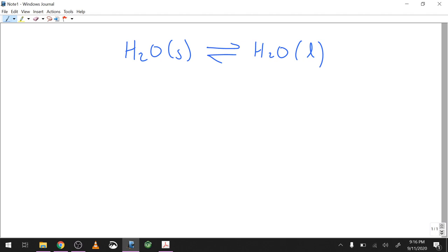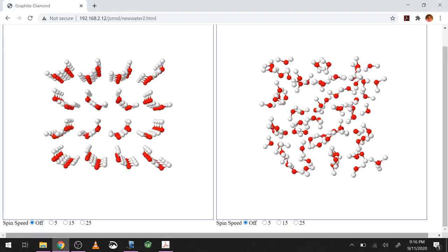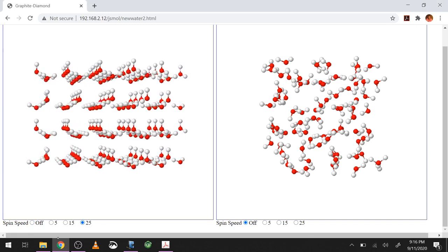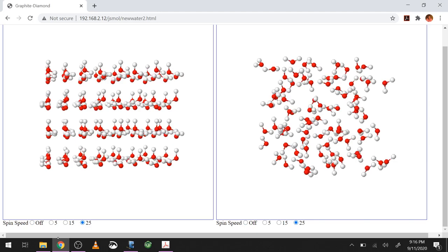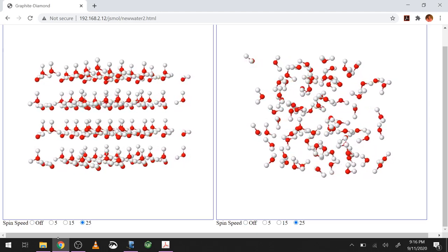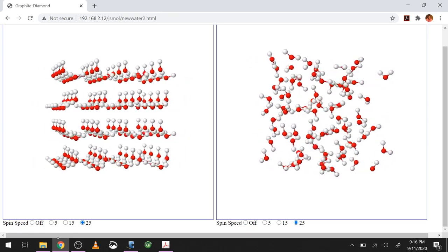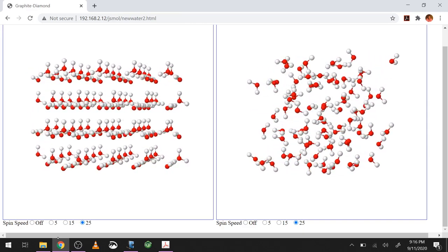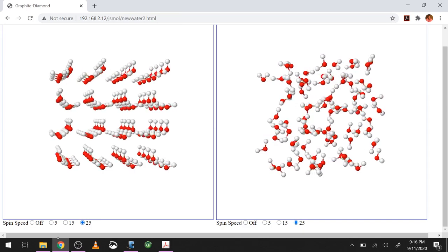But first, I thought it might be useful to actually be able to visualize entropy a little bit. So here is kind of what it looks like. On the left, ice. On the right, liquid water. Notice the drastic difference here. One is clearly very ordered, the other is clearly not so.